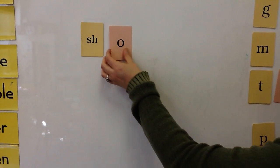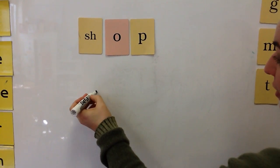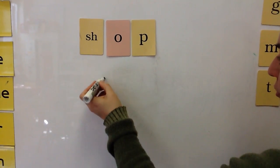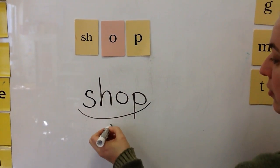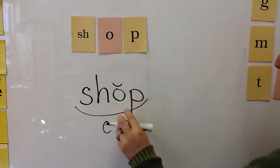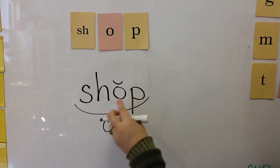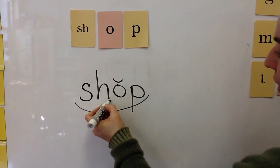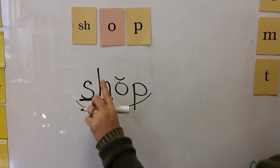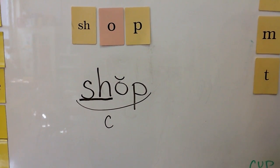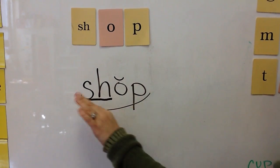For example, the word SHOP is a closed syllable. The O gets a breve because it is a short sound. The digraph is marked with one solid underline to indicate that it gets one tap when we tap it out. So: SH, AH, P — SHOP.